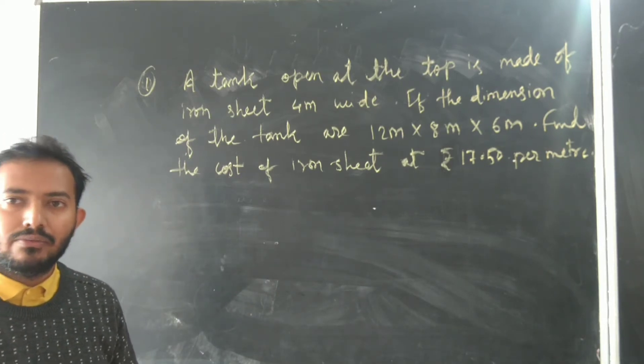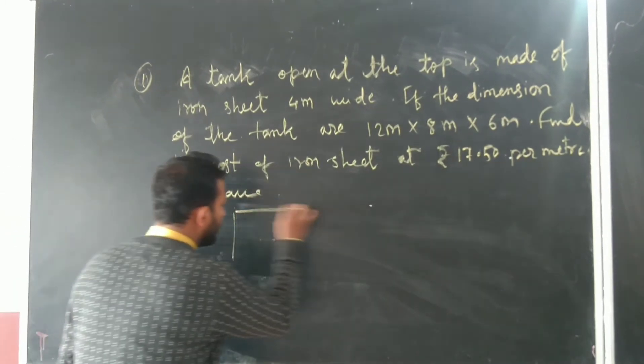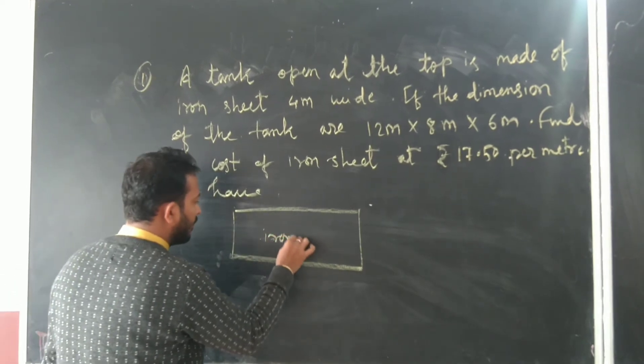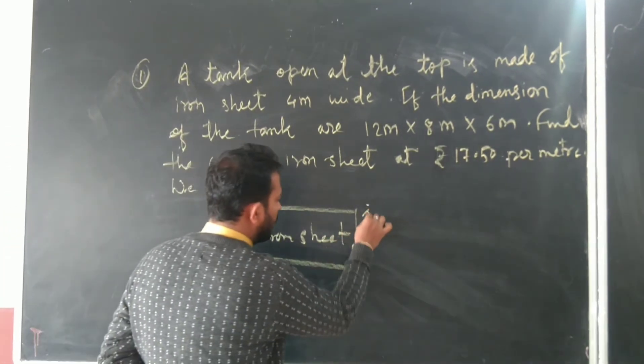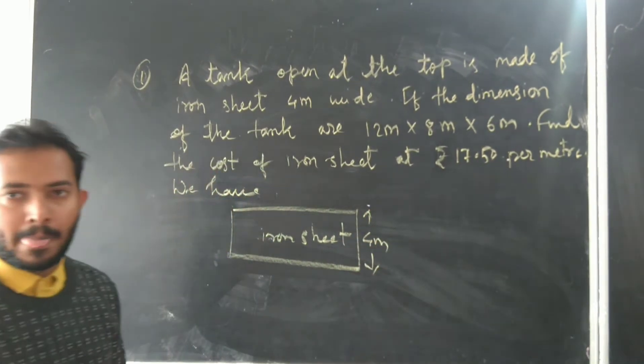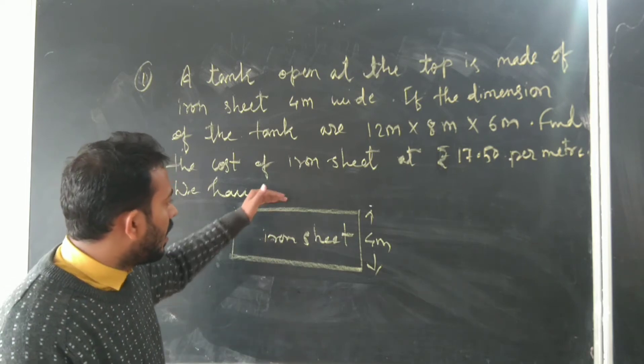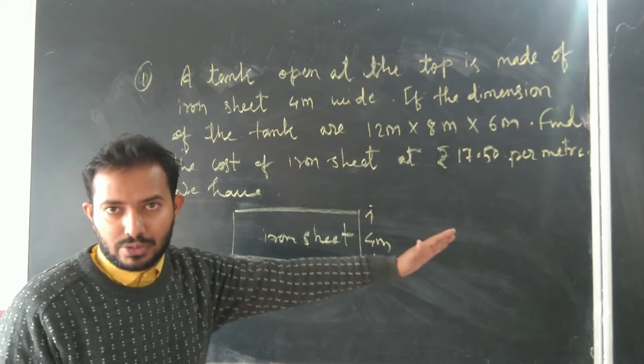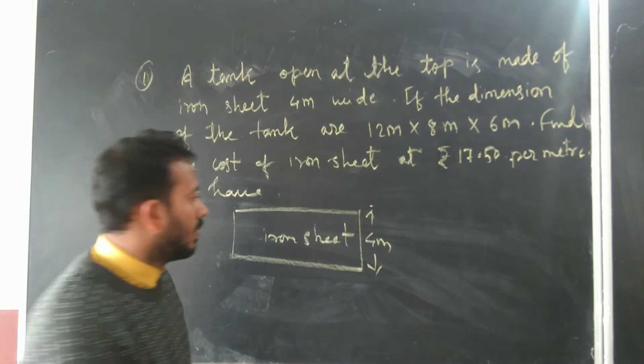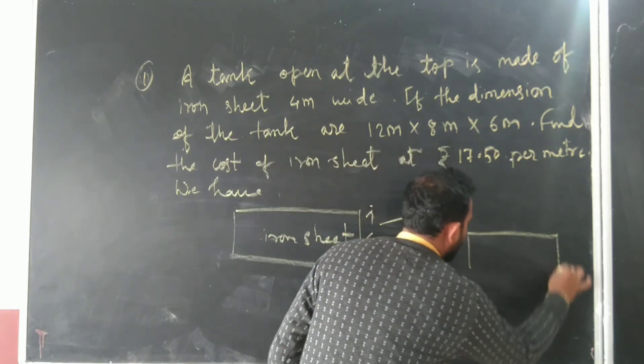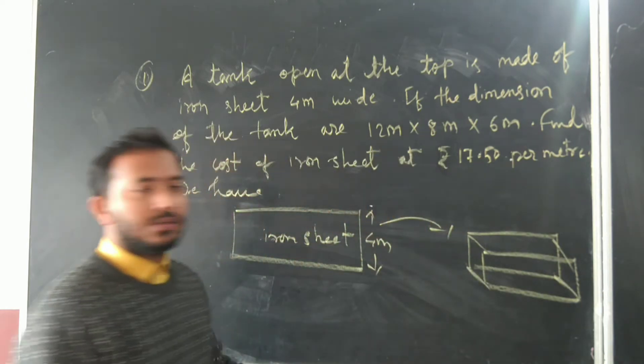Let's try to understand. Here we have a rectangular iron sheet whose width has been given: 4 meters. Now this iron sheet, after cutting and doing some work on it, converts into cuboid form.